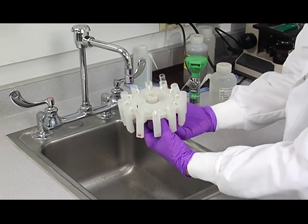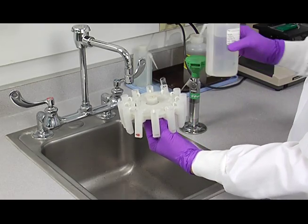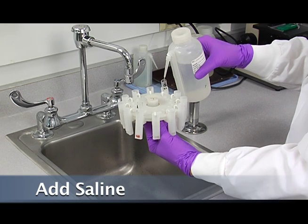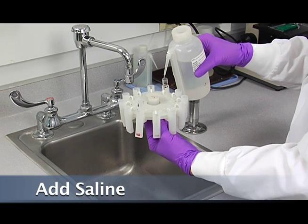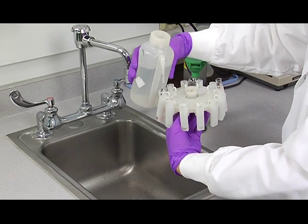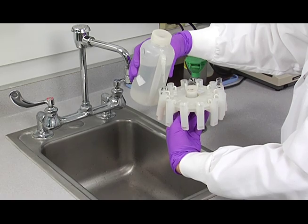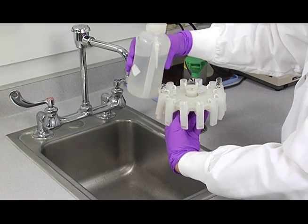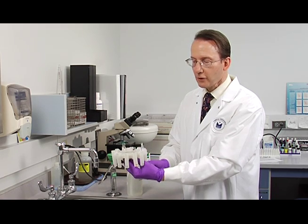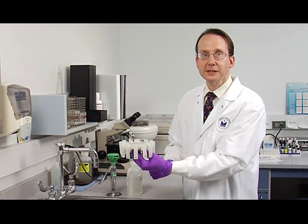Then we're going to add more saline to the tubes after we've drained it out. And you want to be very careful that you don't touch the tip of the saline bottle to your tube because you don't want to contaminate your saline bottle. And then bring it back over to your centrifuge and spin them down for 60 seconds.